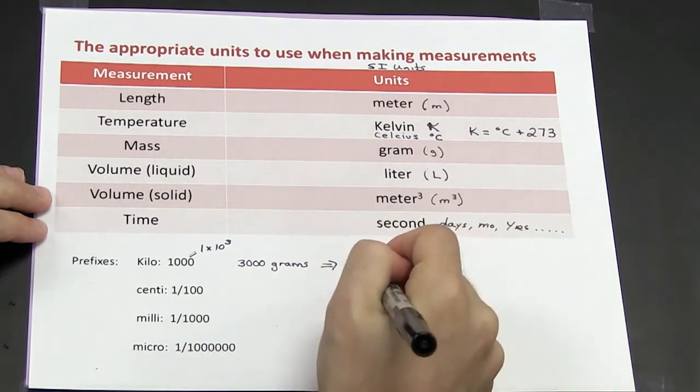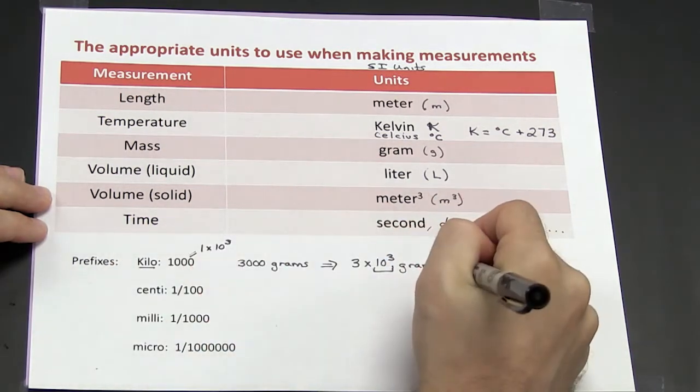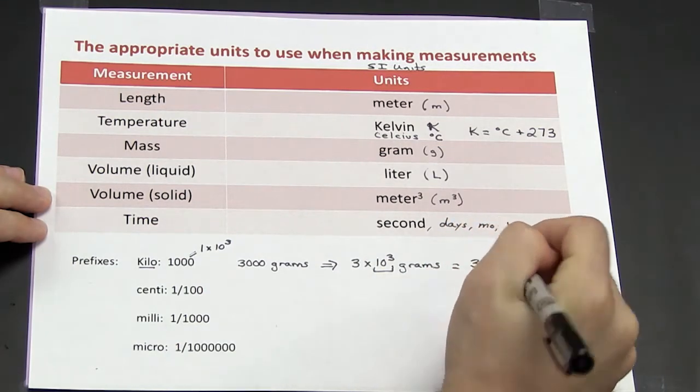And then I can replace the 10 to the third with kilo. So this can be written as 3 kilograms, K for kilo.